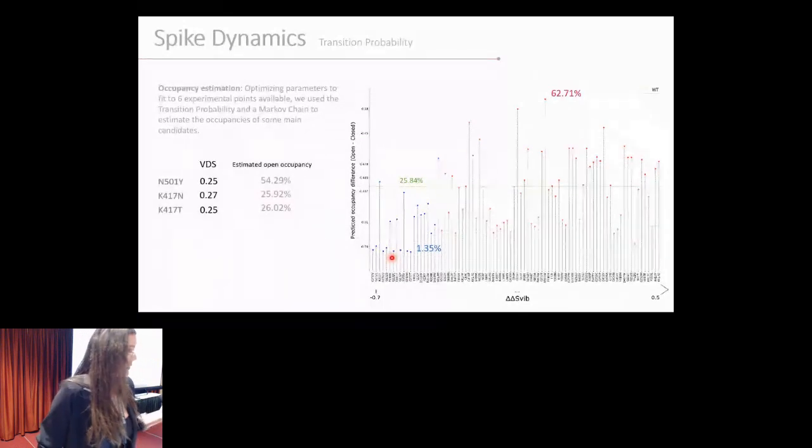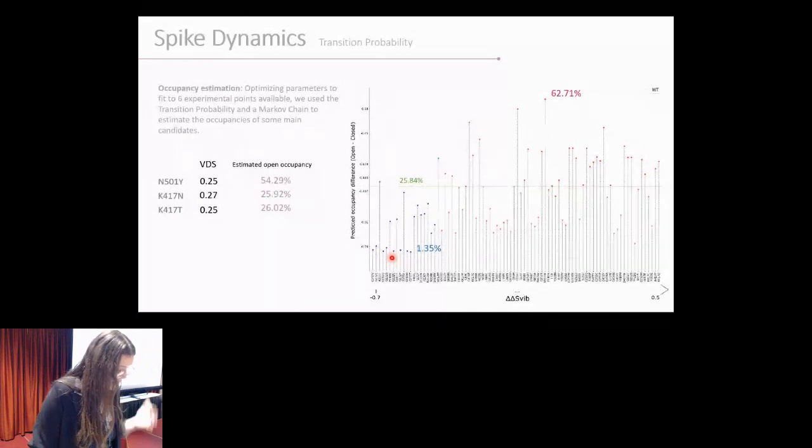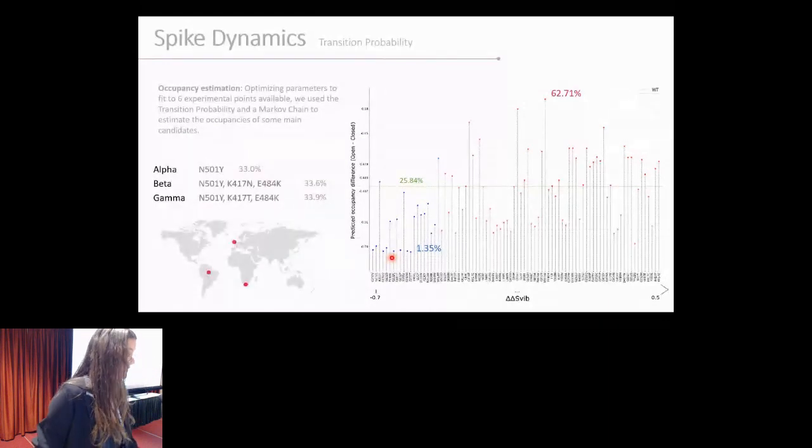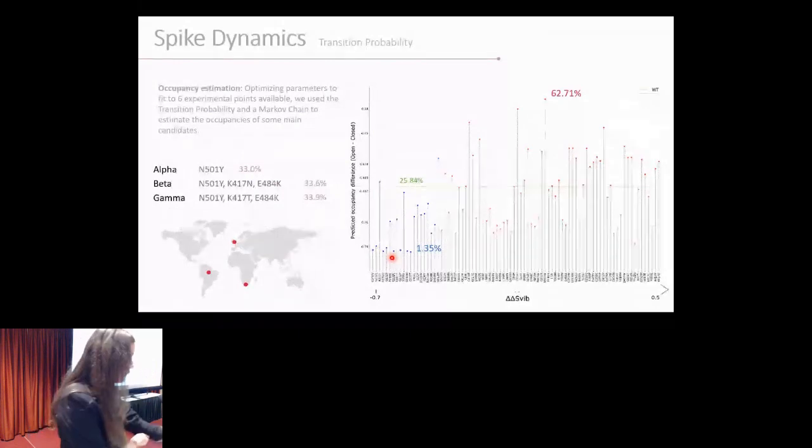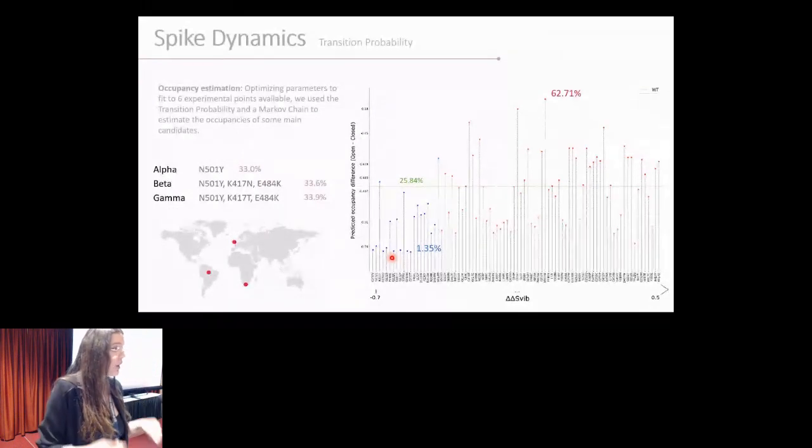Then we were going to try to validate it experimentally. But then, unfortunately, nature kind of validated it for us. Because three of our top candidates were N501Y, K417N, and K417T. Many mutations in the K417 and N501 were among our top candidates. Those became later some of the main mutations of alpha, beta, and gamma variants. So when alpha happened and N501Y was in it, we thought, okay, so maybe it kind of validates our work.